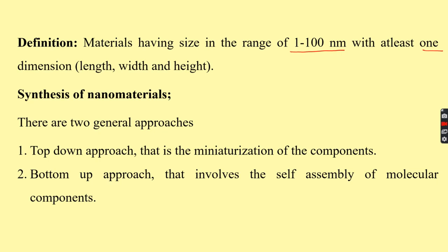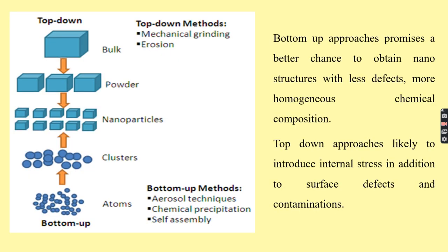The bottom-up approach involves the self-assembly of molecular components. Very tiny atoms are assembled into clusters and further changed into nanoscale components. In the bottom-up approach, the nanomaterial is built from building blocks such as atoms, molecules, etc. — atom by atom, molecule by molecule, or cluster by cluster. In the top-down approach, preparation starts with bulk material that is cut away to get a nanomaterial.